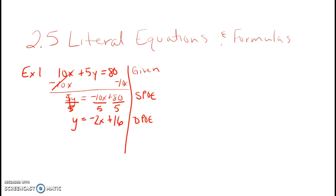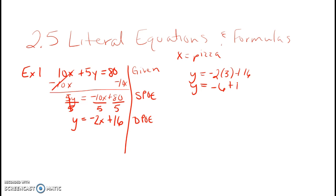According to the problem, x is the number of pizzas and y is the number of sandwiches. The problem asks how many sandwiches you can buy if you buy three pizzas. Since x equals 3, we plug in: y = -2(3) + 16 = -6 + 16 = 10. So you can buy 10 sandwiches if you buy three pizzas.